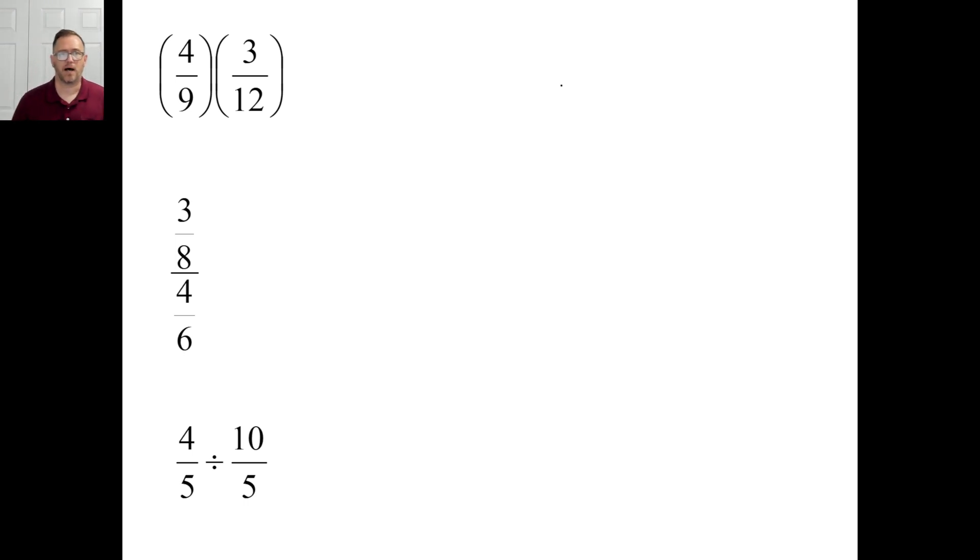Okay. Well, let's try. I think the easiest thing is to cancel. And, you know, let's just go ahead and do that. That's going to be 3 goes into 3 one time. 3 goes into 9 three times. 4 goes into 4 one time. And then 4 goes into 12 three times. So multiplying straight across. 1 times 1. And then 3 times 3. There you go. That's all there is to it.